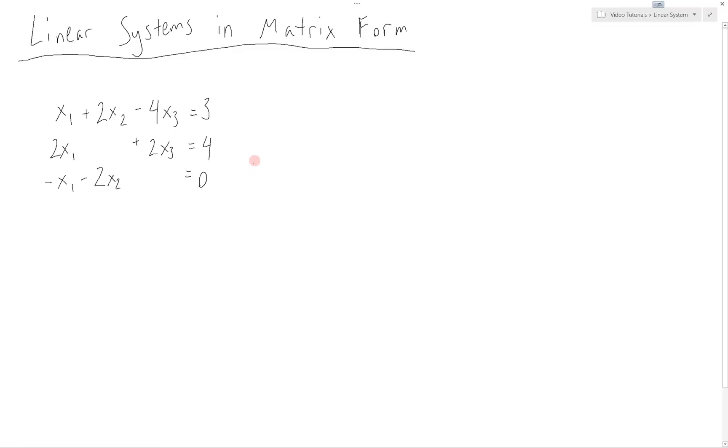This can be rewritten in the following way. x1 times the vector (1, 2, -1) plus x2 times the vector (2, 0, -2) plus x3 times the vector (-4, 2, 0). And all of this is equal to the right-hand side of our equations, (3, 4, 0).